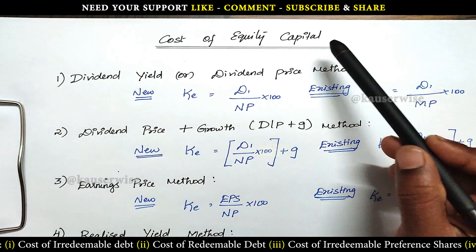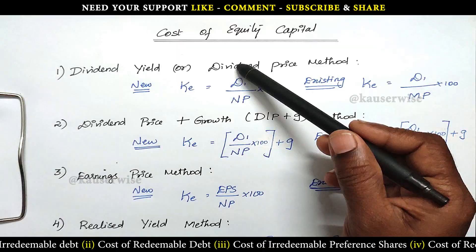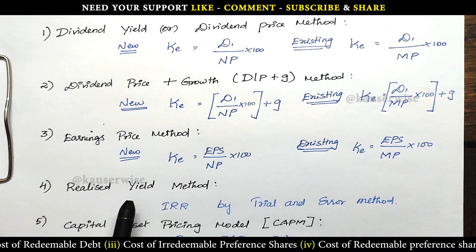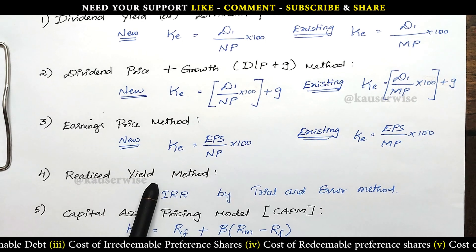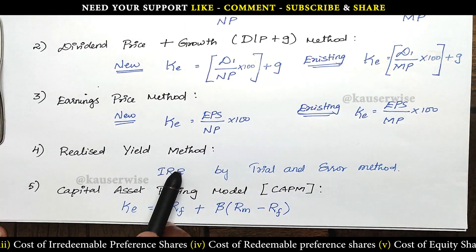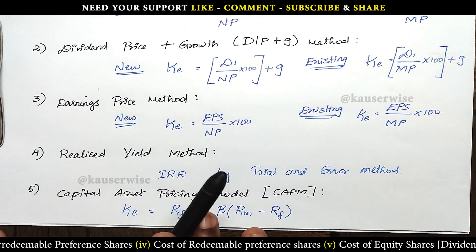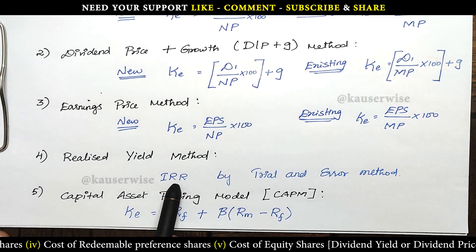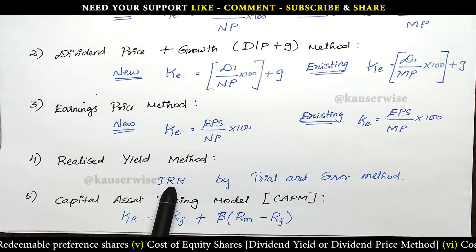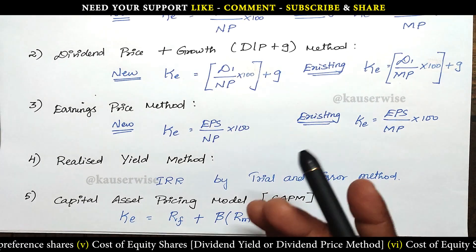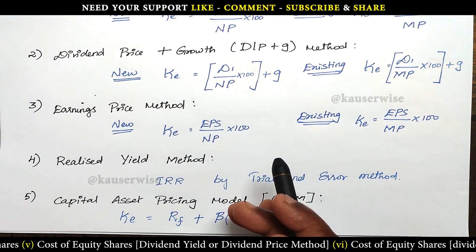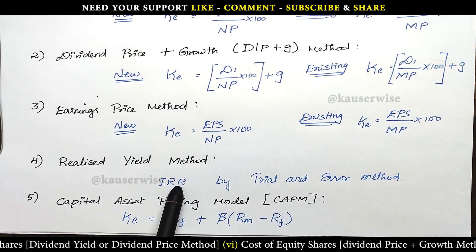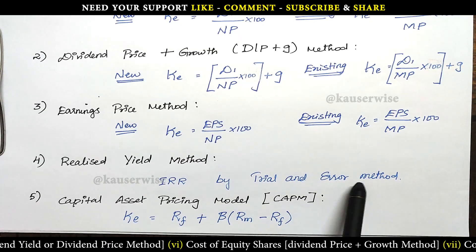Under cost of equity, we have completed the first three models in the previous videos. Now let us see the fourth model, that is the realized yield method. Under this method, the cost of equity capital is the IRR — internal rate of return. It is the rate at which total present value of inflow is equal to total present value of outflow. The IRR is calculated by trial and error method.